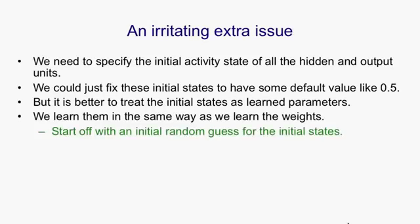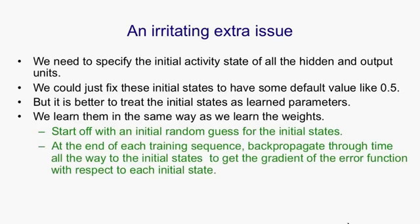We start off with an initial random guess for the initial states, that is, the initial states of all the units that aren't input units, and then at the end of each training sequence, we backpropagate through time all the way back to the initial states, and that gives us the gradient of the error function with respect to the initial state.